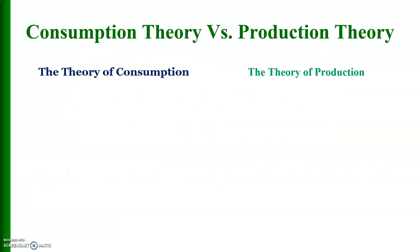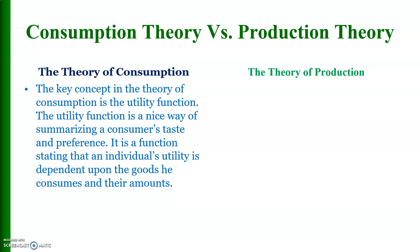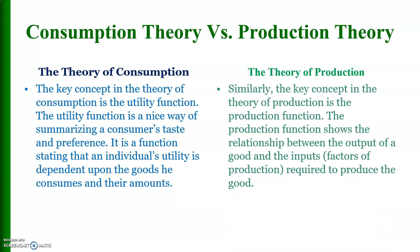In this slide, on the left hand side there is the theory of consumption and on the right hand side there is the theory of production. The key concept in the theory of consumption is the utility function, whereas the key concept in the theory of production is the production function. The utility function is a way of summarizing consumers' tastes and preferences.